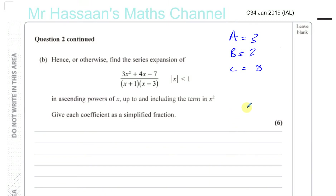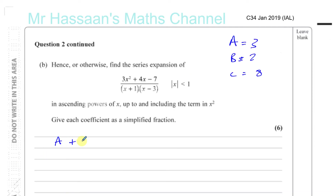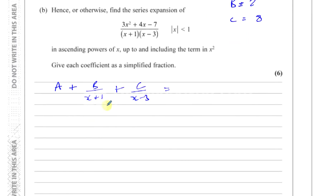For question 2 part B from C3/C4 January 2019, we found the expansion of this. As you can see from the last page, you have A plus B over (x+1) plus C over (x-3). So A was 3, B was 2, giving 2 over (x+1), and C which is 8 over (x-3). They're asking us to find the series expansion of this fraction, which we've now split up into separate terms.